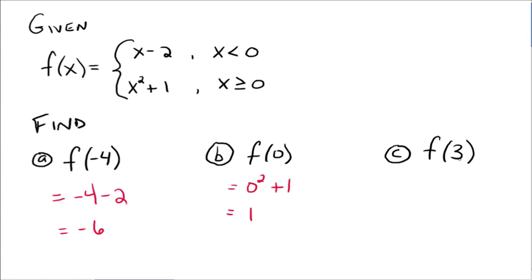And then f of 3 — 3 fits into which part, the top piece or the bottom piece? It fits into the bottom piece because 3 is certainly greater than 0. So we would have 3 squared plus 1, which gives us 10. So f of 3 is equal to 10. That's how you evaluate piecewise functions — this part tells you when you can use each piece of the function.